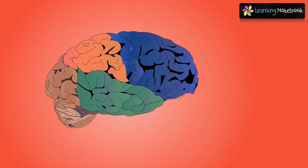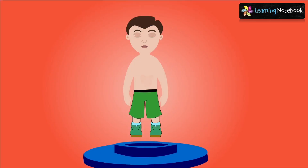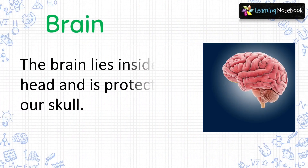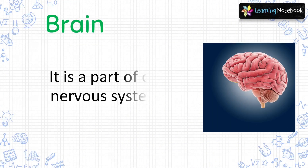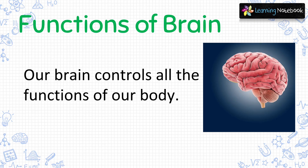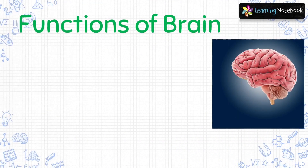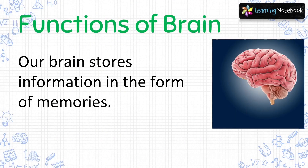The next internal organ is brain. The brain lies inside our head and it is protected by our skull. The brain is a part of our nervous system. Our brain controls all the functions of our body. The brain connects to the nerves that travel throughout our body. Our brain stores information in the form of memories.